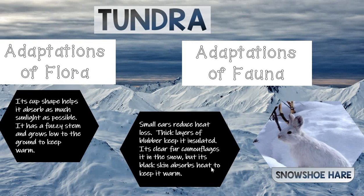Looking at polar bears: they have very small ears, which help to reduce heat loss. They have thick layers of blubber that keep them insulated, and their fur is actually clear — a lot of times we think it's white, but that's just the way the light hits it. The clear fur helps the polar bear to be camouflaged in the snow. The skin of a polar bear underneath that clear fur is actually black, because black absorbs the most heat and helps it stay warm.